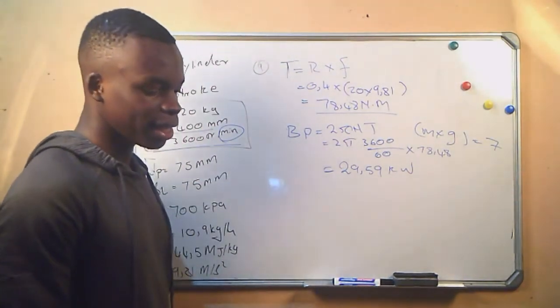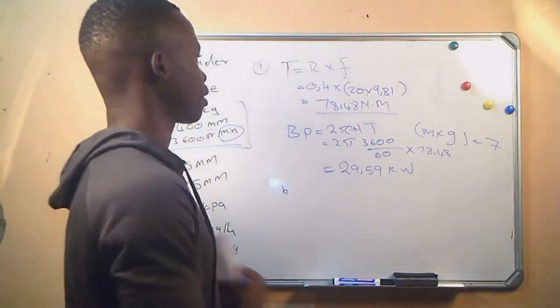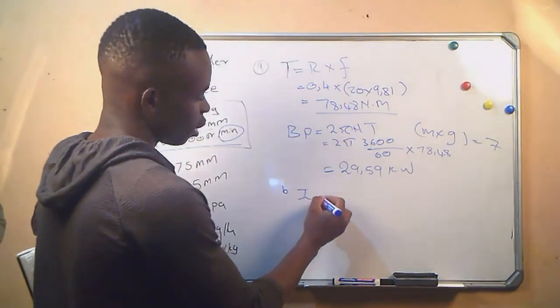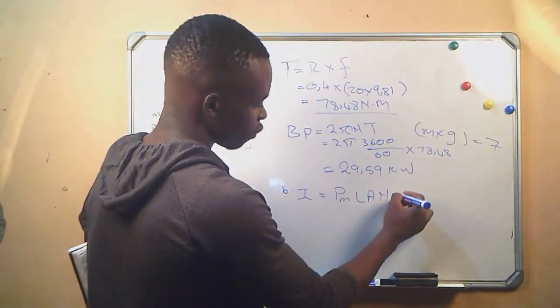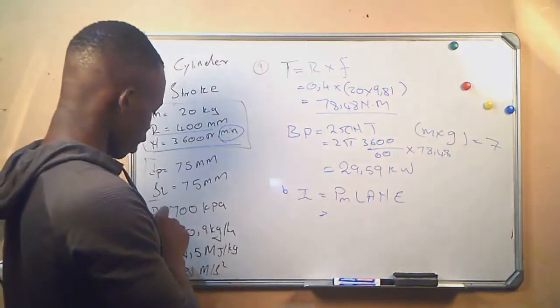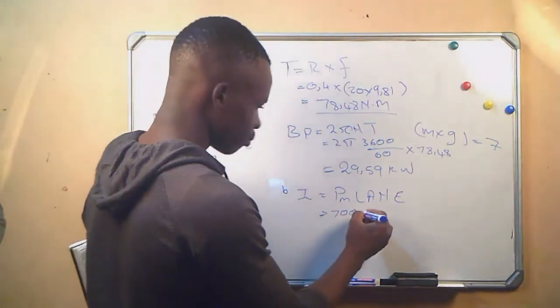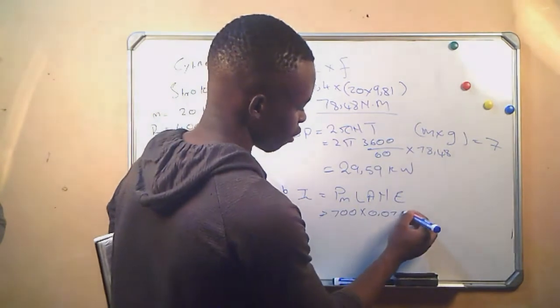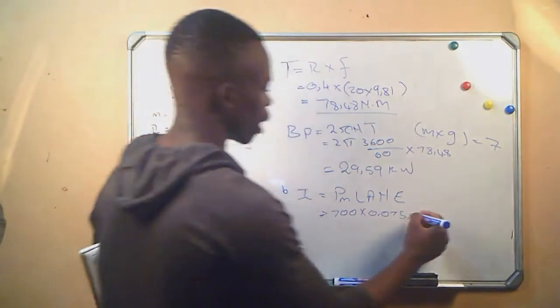Then we go to the second question. They say calculate the indicated power and mechanical efficiency. That is question number B. Indicated power equals mean effective pressure times stroke length times area times rotational frequency times number of cylinders. The mean effective pressure is 700, stroke length is 0.075 times the area. We have the diameter, therefore we can get the area.